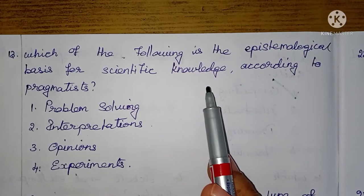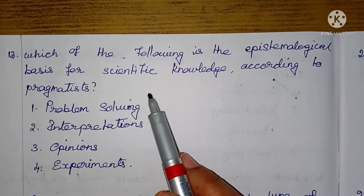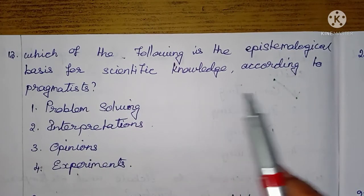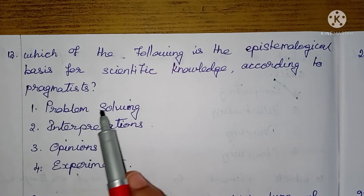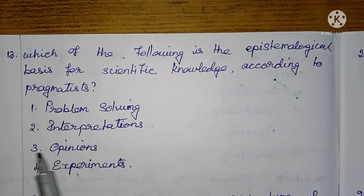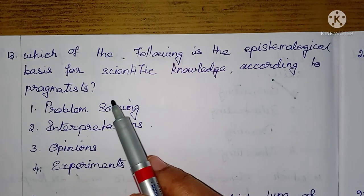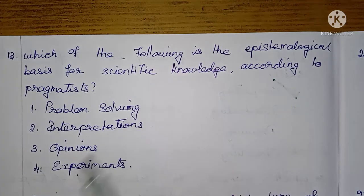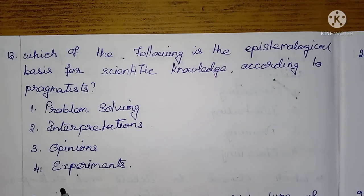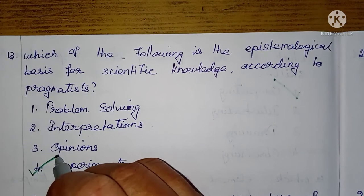Which of the following is the epistemological basis for scientific knowledge according to pragmatists? 1. Problem solving, 2. Interpretations, 3. Opinion, 4. Experiments. According to pragmatists, scientific knowledge is gained only through experiments — option 4 is the right answer.